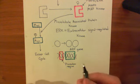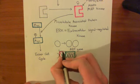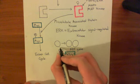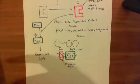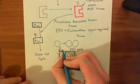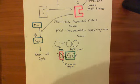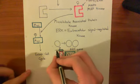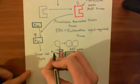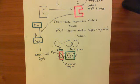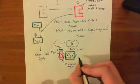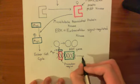Certain proteins can bind to the promoter region and alter its affinity for RNA polymerase. An example is MYC. Transcription factors are proteins or molecules which bind to the promoter regions of DNA and alter the affinity of the promoter region for RNA polymerase. MYC binds to the promoter region of the ARF gene and increases that promoter region's affinity for RNA polymerase, so you get more transcription of the ARF gene, more mRNA produced, and therefore more ARF protein produced.